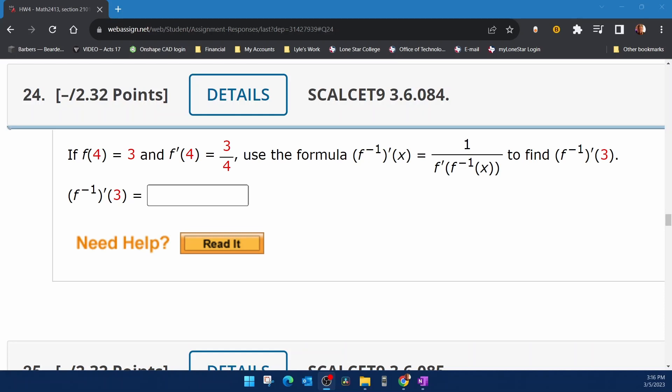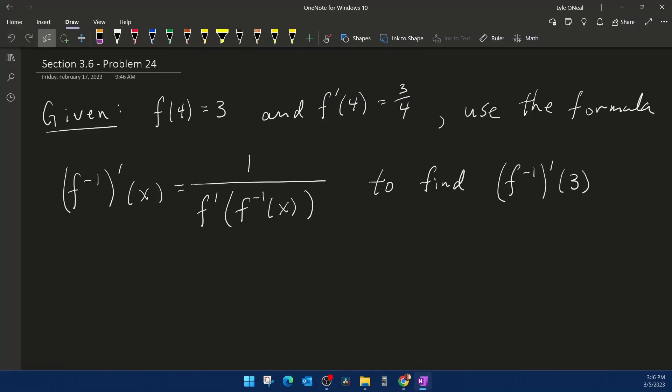And so we're going to go to our notes and show you how to crank this out. So what I've done is I've recopied the problem here in my OneNote, stating that f of 4 equals 3 and the derivative of the function evaluated at 4 is 3 fourths.